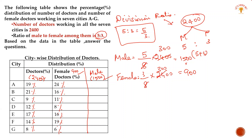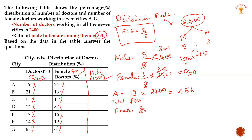Now we have male doctors. For example, in city A, the total number of doctors is 19 percent of 2400. So 19 divided by 100 into 2400 gives 456 doctors in city A. If we calculate female doctors, 24 percent will be female doctors: 24 divided by 100 into 900.